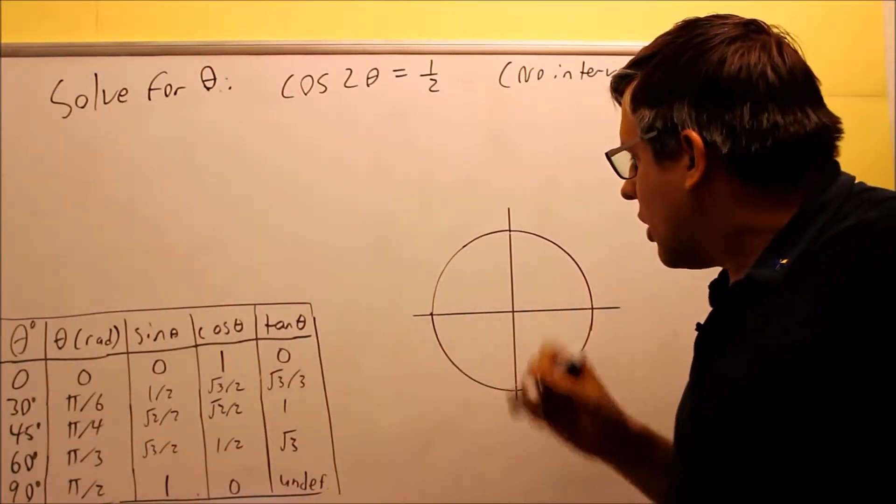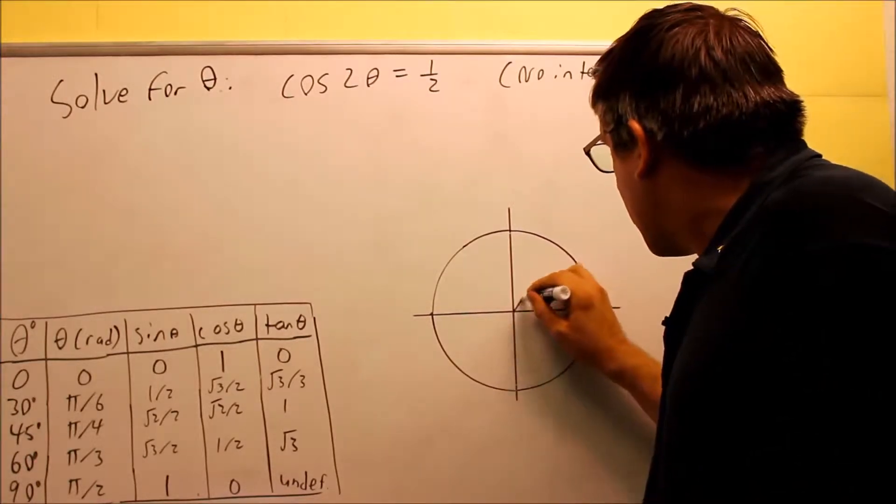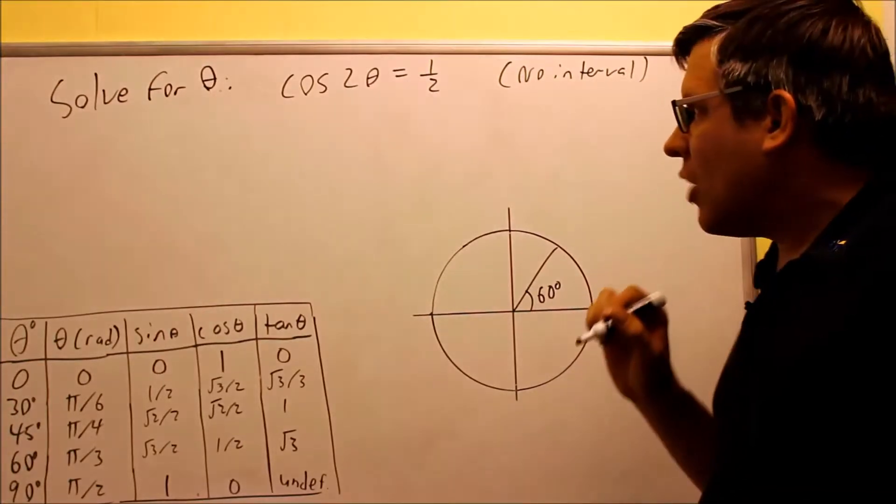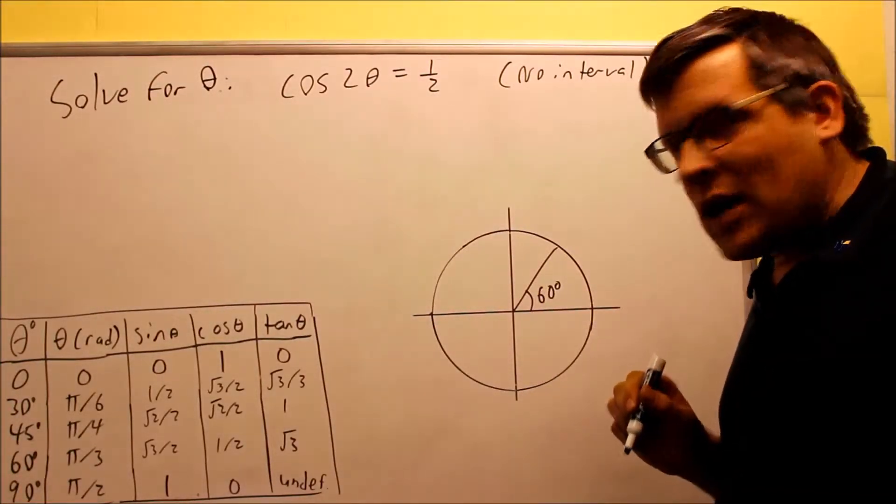So I know that 60 degrees is one of my angles right here. I'm going to go ahead and draw that on my unit circle. 60 degrees is here, and you want to find the other spot where cosine is positive.